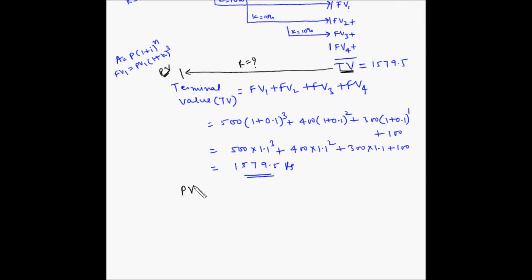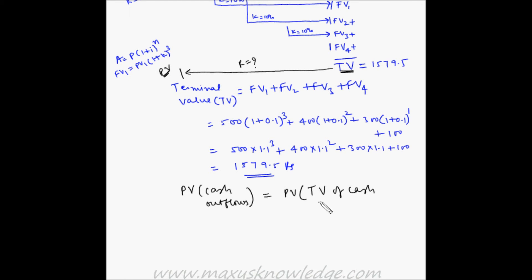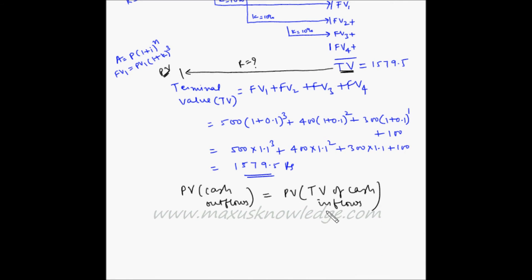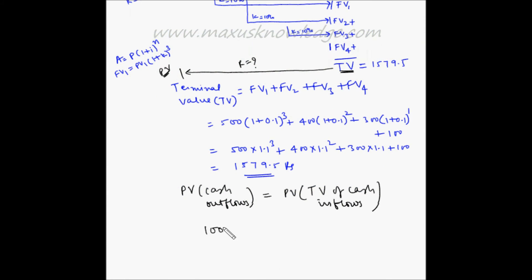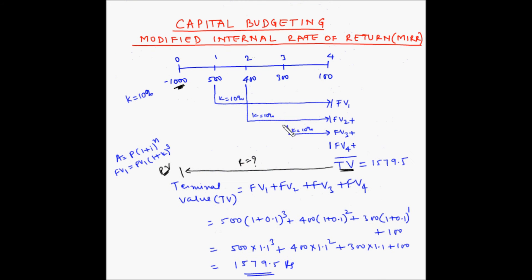The present value of the cash outflows must equal the present value of the terminal value of the cash inflows, and we need to find the rate at which this occurs. In our case, the present value of cash outflows is 1,000. The terminal value of 1,579.5 must be discounted over n equals 4 years to find its present value.